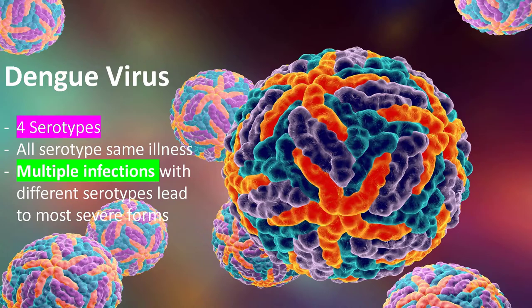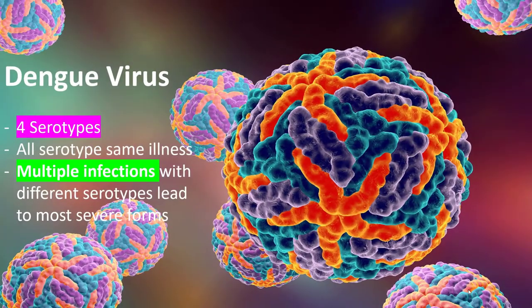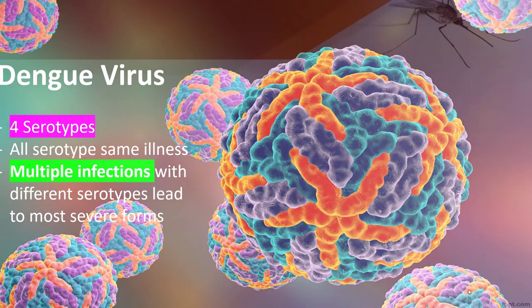All four serotypes cause the same illness. Once a virus infects a person, they become immune to that particular subtype, which is why in a lifetime a person can get dengue a maximum of four times. However, infections from multiple serotypes can lead to severe forms of illness like dengue hemorrhagic fever and dengue shock syndrome.